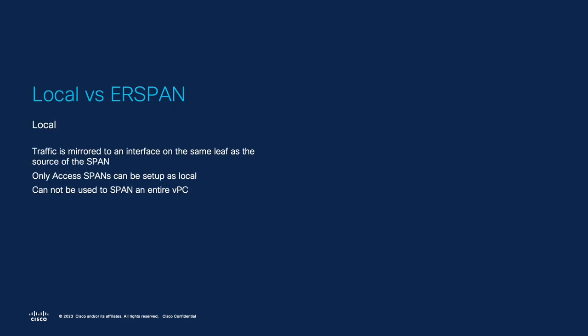What are the differences between local SPAN and ERSPAN? With local SPAN, we mirror traffic from one or more interfaces to another interface on that same switch. There are some caveats with using local SPAN in ACI. The first being that only access SPANs can be set up as local, and also a local SPAN cannot be used to capture traffic on a VPC, because local SPANs are scoped to a single switch.